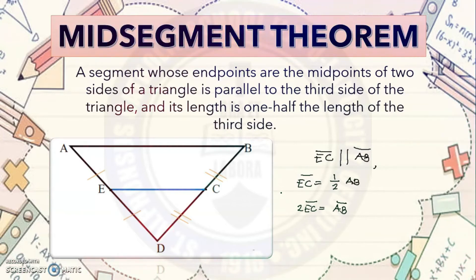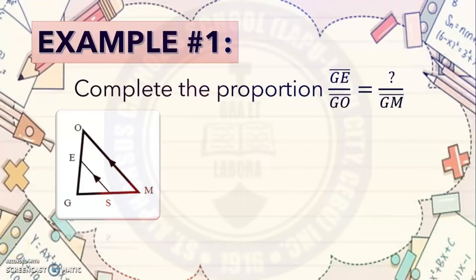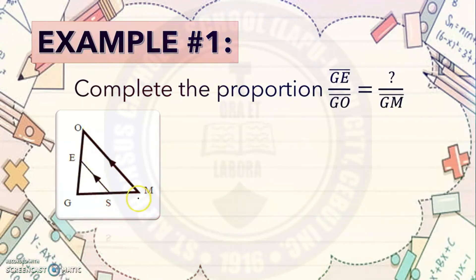Now we are going to use the concepts of these theorems to solve problems. Example number one: complete the proportion — GE over GO equals blank over GM — given the figure. As you can see on the figure, ES and OM are parallel because of the parallel line symbolism shown.